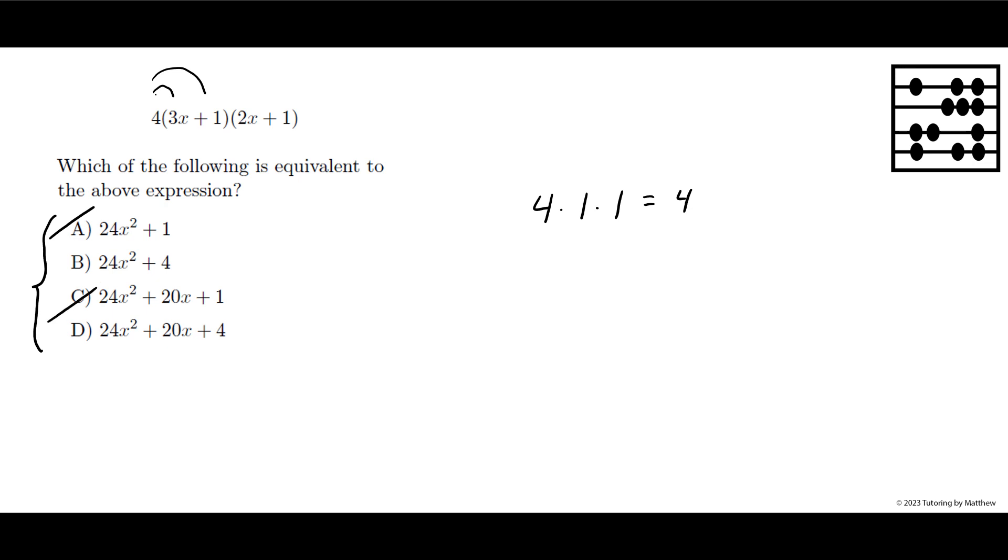Now if you have any experience multiplying binomials, in this case there's always going to be three terms. But just to confirm that, 3x times 1 and then you have 2x times 1. This gives you 3x plus 2x which is 5x, and when you multiply by 4, that gets you the 20x.